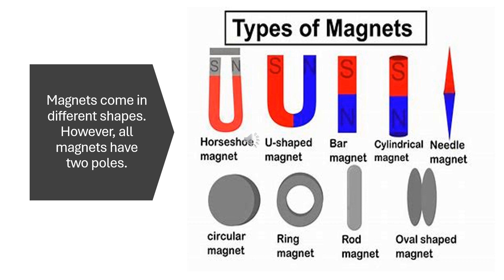Types of Magnets. Magnets come in different shapes, however all magnets have two poles — the north and the south pole only.